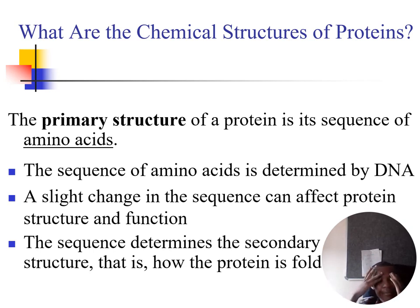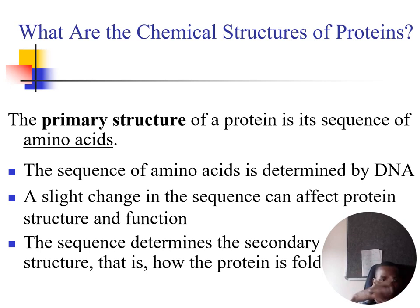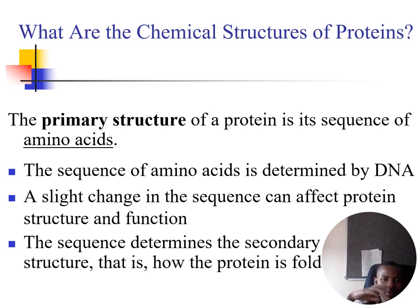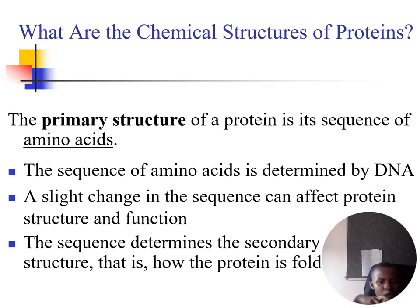Proteins exist in four structures: the primary structure, the secondary structure, the tertiary structure, and the quaternary structure. The primary structure is the sequence of amino acids while they are still in a single peptide chain or strand. This sequence of amino acids is determined by the DNA, and a slight change in the sequence can affect both the structure and the function.